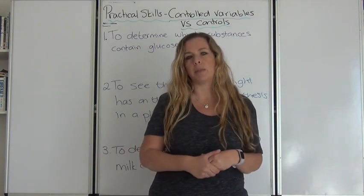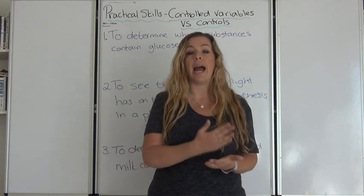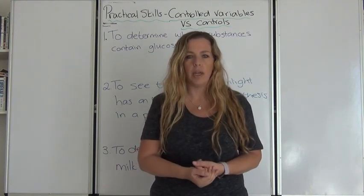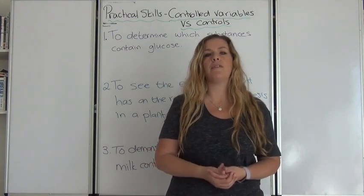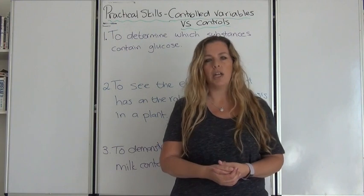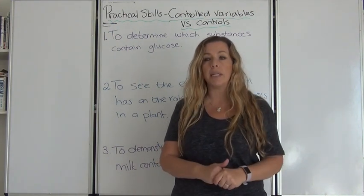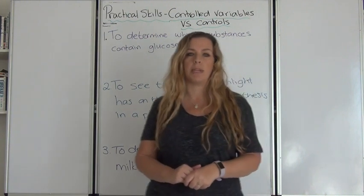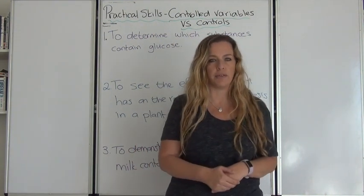In order for the experiment to be accurate you need to ensure that every other variable is controlled, otherwise you're going to have more than one independent variable and that will affect the results of the experiment. Let's look at some controlled variables for the following three experiments.